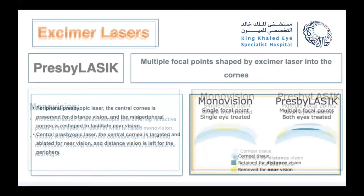In presbyLASIK, the goal is different: we create multiple focal points for the patient to function at near, distance, and intermediate through the cornea. It is divided into peripheral presbyLASIK and central presbyLASIK. In peripheral, the central cornea is preserved for distance and the mid-periphery is reshaped for near. In central presbyLASIK, the central cornea targets near vision and the periphery handles distance.